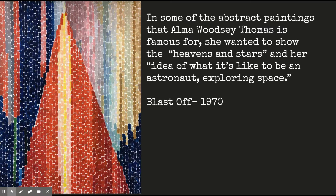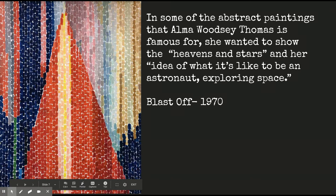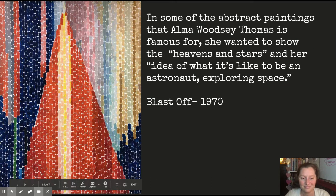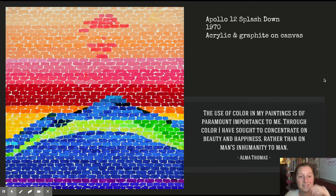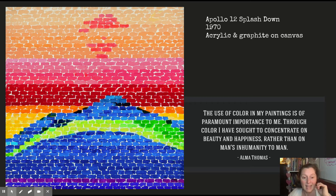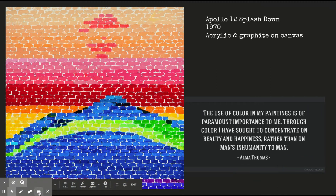In some of the abstract paintings that Alma Woodsy Thomas is famous for, she wanted to show the heavens and the stars, and her idea of what it's like to be an astronaut exploring space. This one is called Blast Off, and it was made in 1970. This one is called Apollo 12 Splash Down, also made in 1970, and this one is so colorful. Color was a super important thing for Alma Woodsy Thomas, and this is what she said about it: 'The use of color in my paintings is of paramount importance' — that means like the most important thing. 'Through color, I have sought to concentrate on beauty and happiness rather than man's inhumanity to man.'